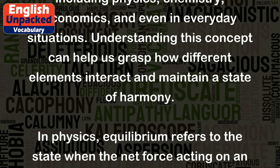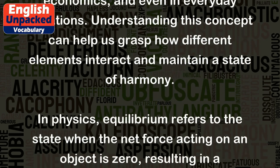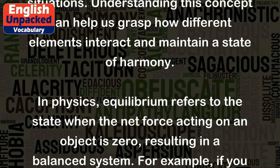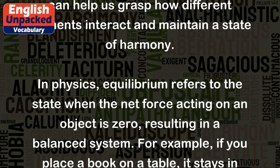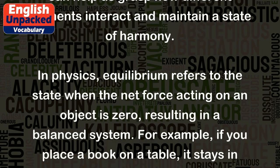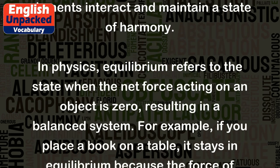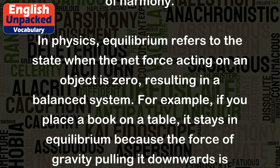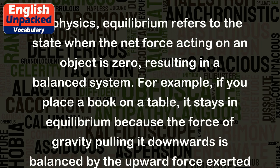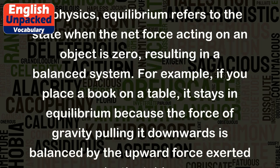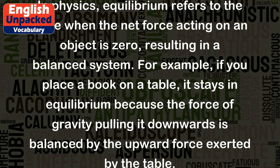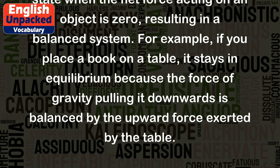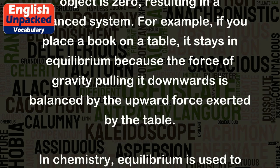In physics, equilibrium refers to the state when the net force acting on an object is zero, resulting in a balanced system. For example, if you place a book on a table, it stays in equilibrium because the force of gravity pulling it downwards is balanced by the upward force exerted by the table.